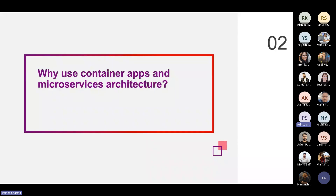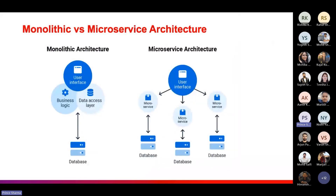Coming to why we should use container apps and microservices architecture. To understand it better, we first need to understand what monolithic and microservice architecture are. In monolithic architecture, all the components and functionality of an application are integrated into a single code base — they share the same technology. The user interface, business logic, and data access layer all share the same technology and are tightly integrated and deployed together.